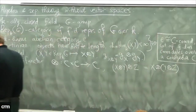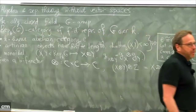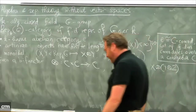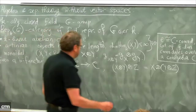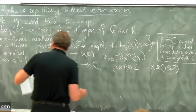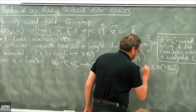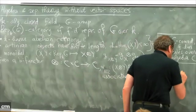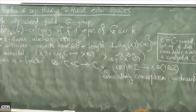Instead of saying x ⊗ (y ⊗ z) and (x ⊗ y) ⊗ z are equal, we say they are isomorphic and specify the isomorphism as part of the data. This is an additional piece of data called α_{x,y,z} — an isomorphism from (x ⊗ y) ⊗ z to x ⊗ (y ⊗ z). This is called the associativity isomorphism or associativity constraint, and it must satisfy some axiom.